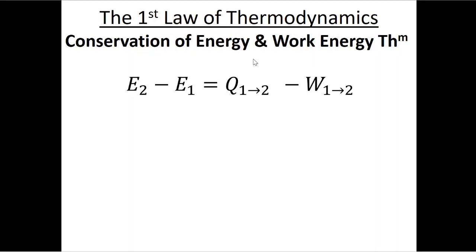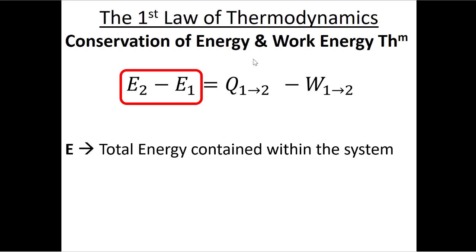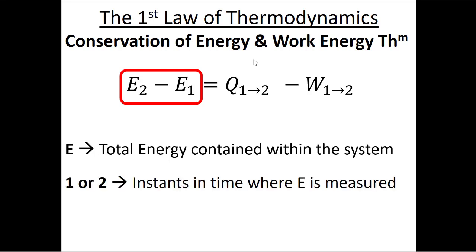In the equation, delta E uses capital E, which tells us this is an extensive property that depends on mass — the more mass, the more energy. This is the total energy contained within the system at a given state point. As we move from state one to state two, E2 is the energy at time tau and E1 is the energy at time zero. The subscripts tell us that state one and state two are different instances in time where we measure those two independent intensive properties like temperature and pressure.